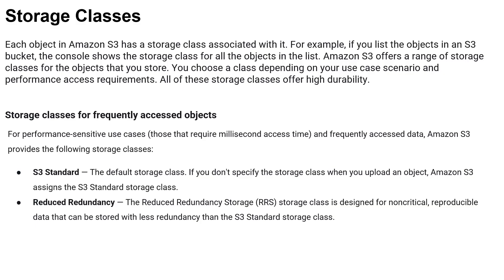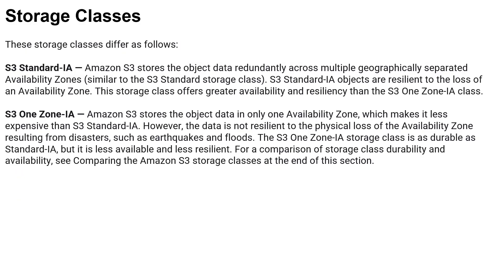There are two types: S3 Standard and Reduced Redundancy. Reduced Redundancy is designed for non-critical, reproducible data that can be stored with less redundancy than the S3 Standard storage class. It's pretty much the same, except if you feel the data can tolerate lesser redundancy, you use the Reduced Redundancy option.